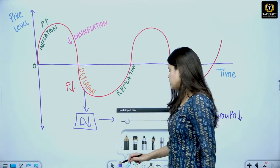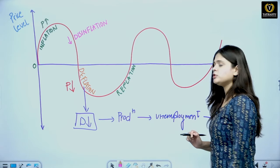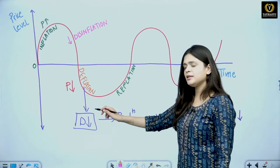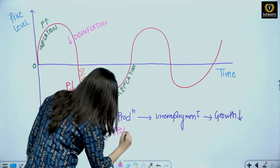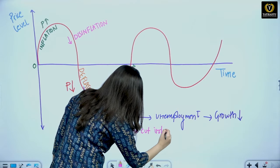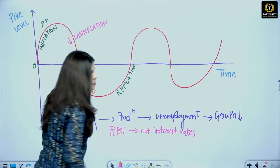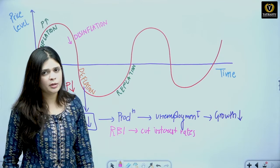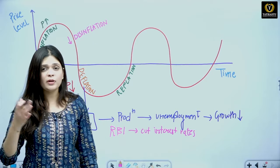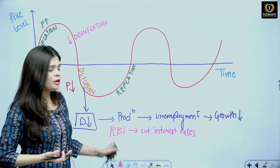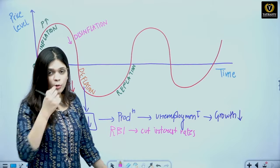What will the government and RBI do in the case of deflation? Using monetary policy tools, the RBI will cut interest rates so that loans become cheaper, lending becomes cheaper, money supply increases in the economy, demand increases, and supply starts increasing. Hence, prices will start to increase a bit, we will come out of deflation, and we will enter reflation. The key monetary policy tool used here is the repo rate.